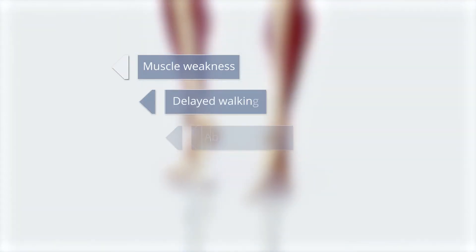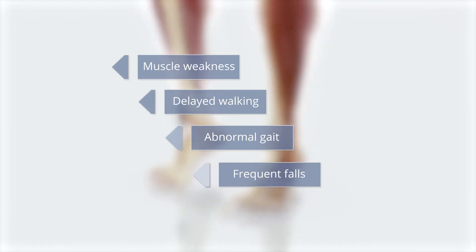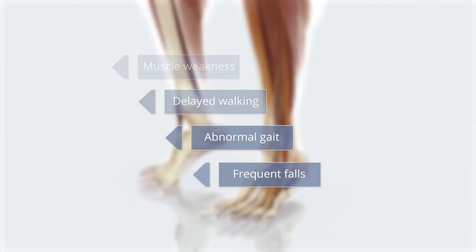DMD is a universally fatal disease which is characterized by muscle weakness leading to delayed walking, abnormal gait, and frequent falls among other developmental delays in the first few years of life.